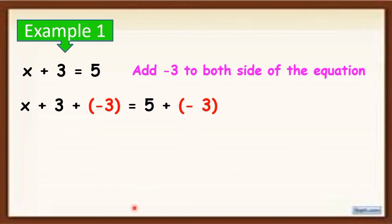Then simplify. 3 plus negative 3 is equal to 0, and 5 plus negative 3 is equal to 2. So we have x plus 0 is equal to 2 here. Therefore, x is equal to 2.